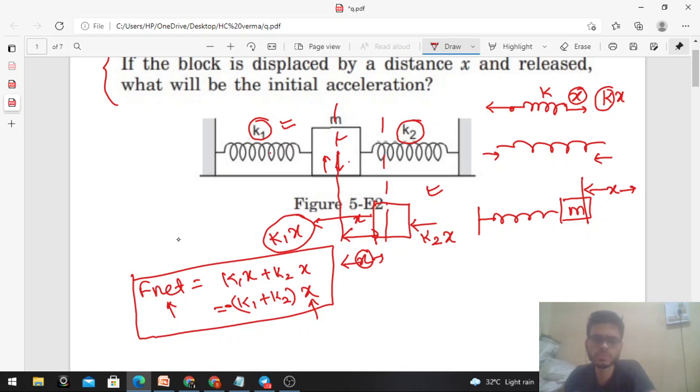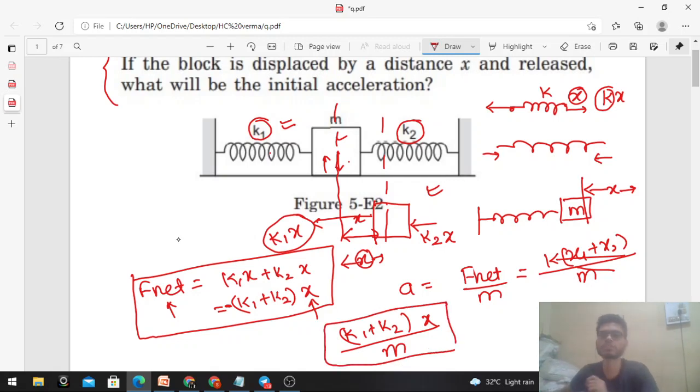So once you have F net, you can easily find out the value of acceleration. That is nothing but F net upon mass of the object. Just divide it: K1 plus K2 into X divided by the mass of the block. So this is your acceleration of the block.